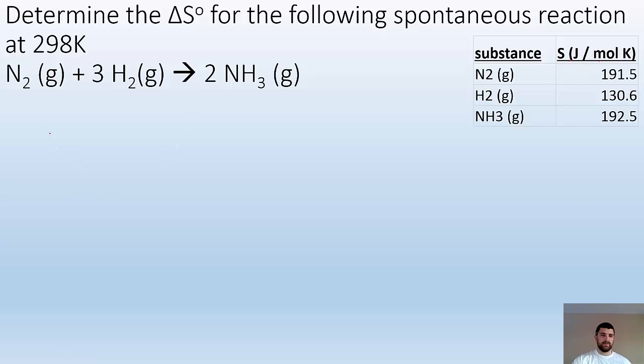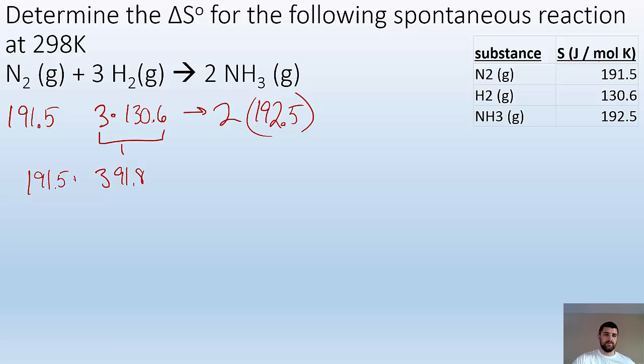Now I'll do a little bookkeeping. N2 is 191.5, 3H2 is 3 times 130.6, and it goes to 2NH3, where each NH3 is 192.5. Now I'll calculate the sum of reactants and products. Three times 130.6 gives 391.8, and N2 is still 191.5 because there's only one of them.